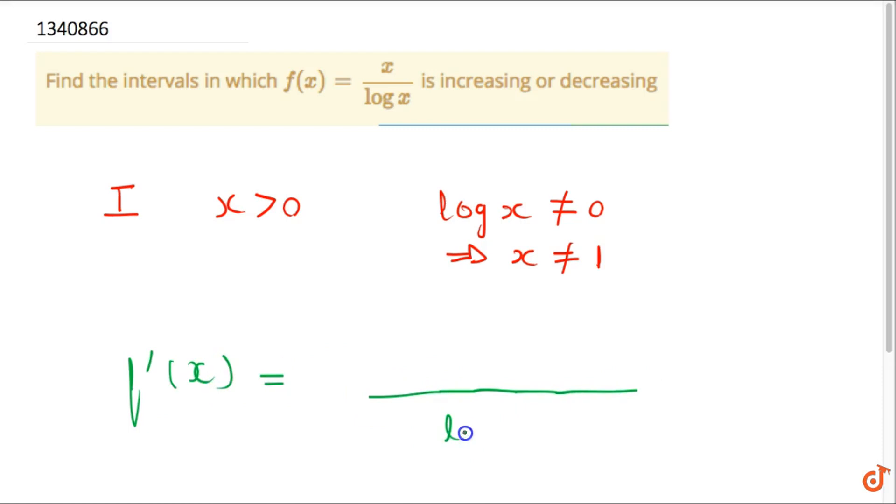f dash x will be equal to log x whole square into, x dash into log x, so that will be log x minus x into log dash x, so that will be equal to 1.